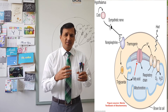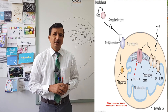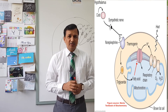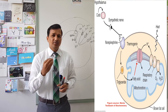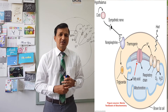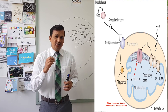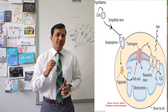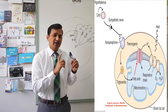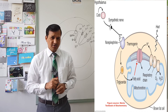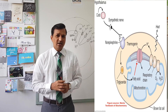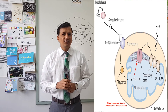What does norepinephrine do by binding to the beta-3 adrenergic receptor? On binding, norepinephrine mediates activation of an enzyme called hormone-sensitive lipase. This hormone-sensitive lipase enzyme is going to break down triacylglycerol in our tissues, especially in brown adipose tissue, releasing free fatty acids.